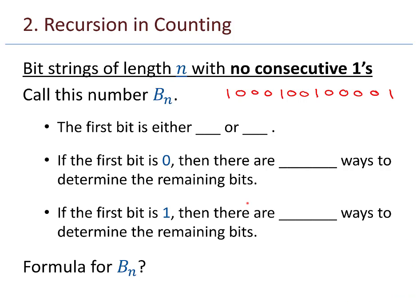The first bit is either a 0 or 1, so those are the two cases I will split my counting into. If the first bit is 0, then there's only one way to choose that. What about all the remaining bits? They can be anything, as long as they don't have consecutive ones — so there are b_{n-1} ways to fill in the remaining bits.